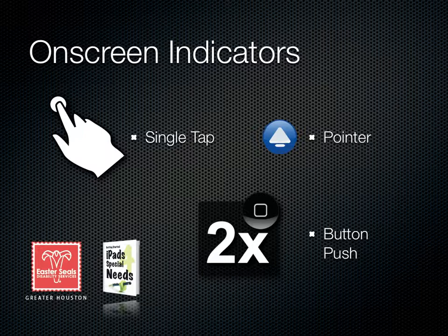We're going to use three different types of visual indicators. We'll use a hand every time I tap. Every time I hit a button on the outside of the device, we'll give you an icon, and we'll use arrows to help point out key information on screen.